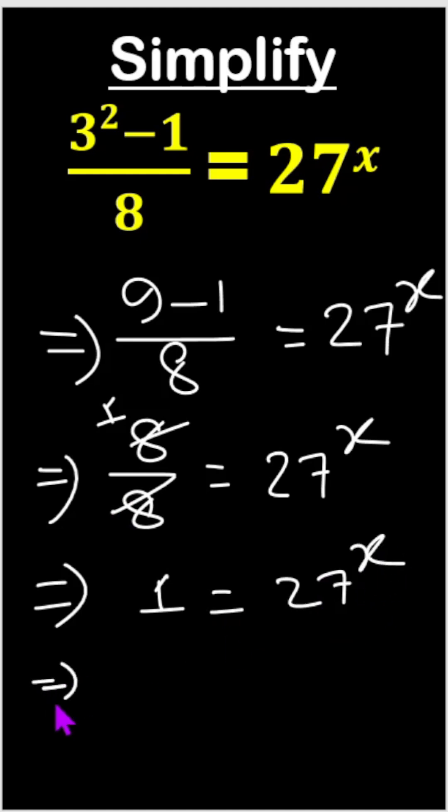Now we can write 27^0 = 27^x. Why are we writing this? Because we know a^0 = 1, so we need to make similar bases.